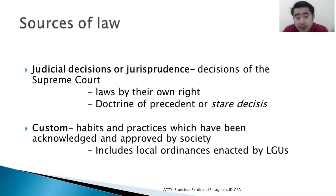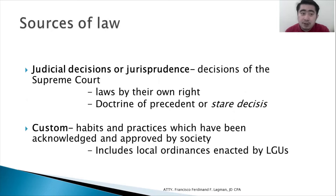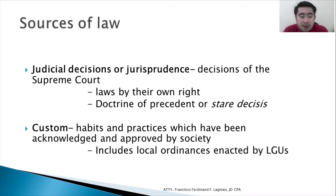We have judicial decisions or jurisprudence — decisions of the Supreme Court. They are laws by their own right. We have the doctrine of precedent or stare decisis. In law school, you read many cases, because the decision in one case should be implemented in similar next cases. Supreme Court decisions are as good as law. However, judges cannot create laws; the judicial branch can only interpret laws, not create them. Then we have custom — habits and practices which have been acknowledged and approved by society.